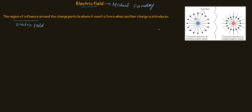We show this region of influence by imaginary lines called electric field lines. Conventionally, the electric field lines from a positive charge move away from the charge particle, and for a negative charge particle they are entering into the charge particle.